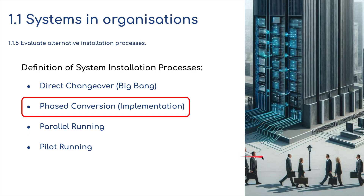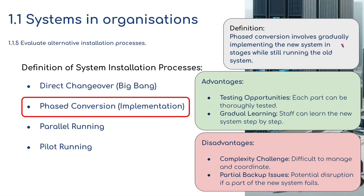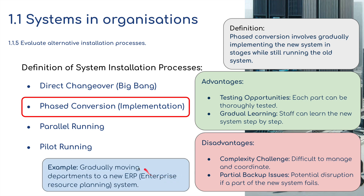Phase conversion involves gradually implementing the new system in stages while still running the old system. Advantages include testing opportunities — each part can be thoroughly tested — and gradual learning, where staff can learn the new system step-by-step up to a specific deadline when the changeover takes place. Disadvantages include complexity, as it's difficult to manage and coordinate, and partial backup issues — potential disruption if part of the system fails. Gradually moving departments to a new ERP (Enterprise Resource Planning) system might be a good example of this.